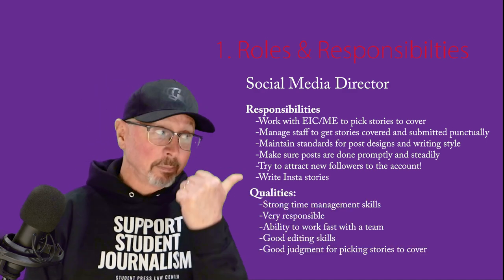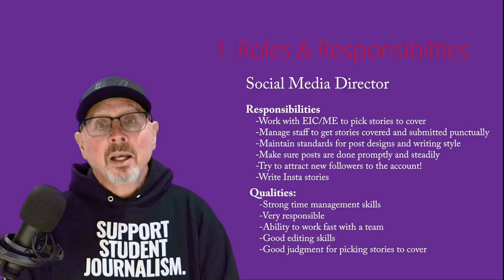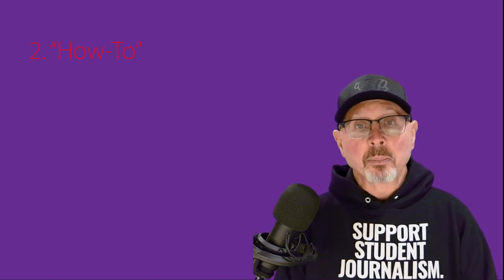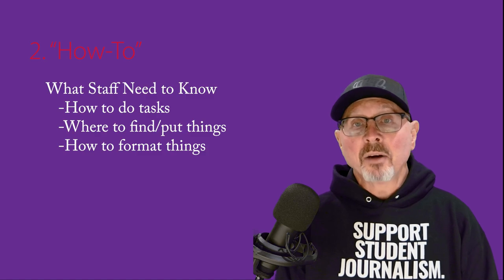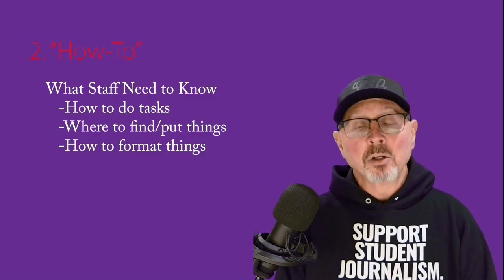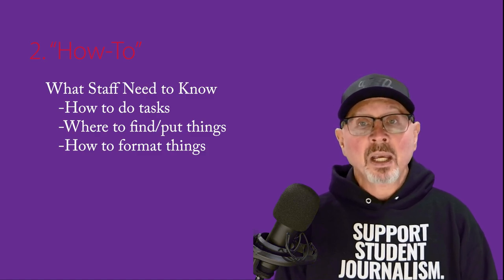Here's an example. The next element to include is the how-to section — the processes used to create your publication. This is the classic section that a staff can look to when they don't know how to do something. It should cover anything that writers, editors, and photographers need to know to do their job.